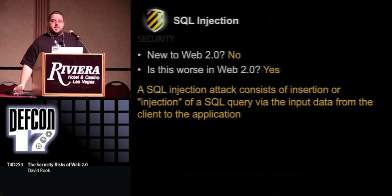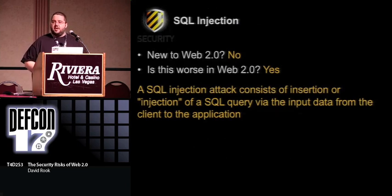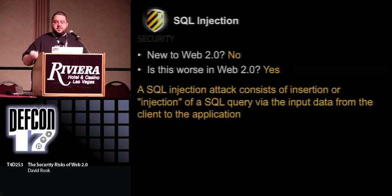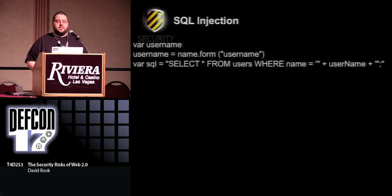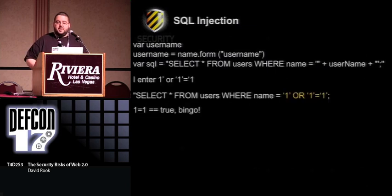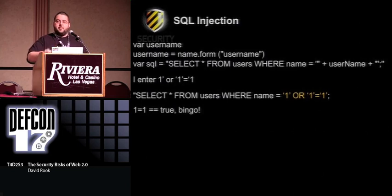SQL injection — again, not a new vulnerability. But what we're seeing now is a different way of exploiting it or a different motive. It allows an attacker to inject his own SQL into your back-end query. A simple example: we take a username from the user and do a SELECT * FROM users WHERE name equals the username provided. If he provides something like 1 OR 1=1, the query becomes 'give me all usernames where it's equal to true.' It's a real simple example, but we'll look at a real-world exploit in a minute that wasn't much more complicated.